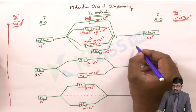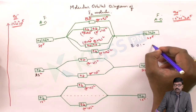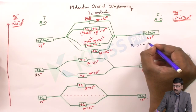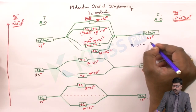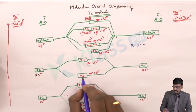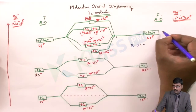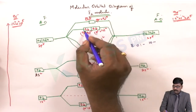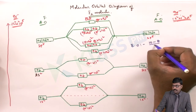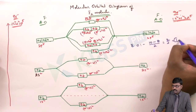For the bond order of F2: there are 10 bonding electrons and 8 antibonding electrons. So the bond order is (10 minus 8) divided by 2, which equals 2 divided by 2, giving a bond order of 1. This confirms that F2 is bonded with a single bond.